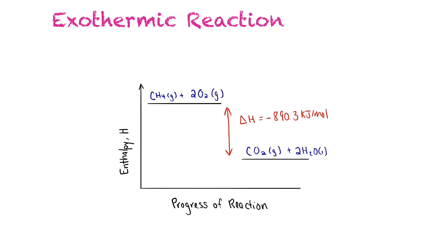In this example, we see that there is an exothermic reaction. These are our reactants, and these are our products, and the delta H is negative 890.3 kilojoules per mole. We see this is our enthalpy, our H value on the y-axis, and then the progress of reaction occurring on the x-axis. This one would be exothermic because there is a drop, a negative delta H value.